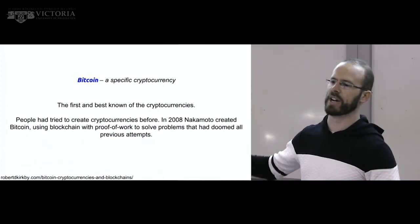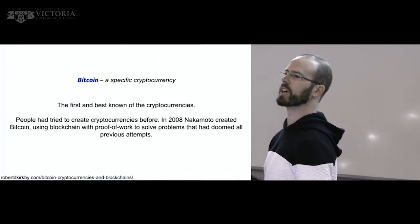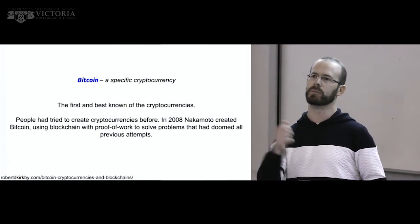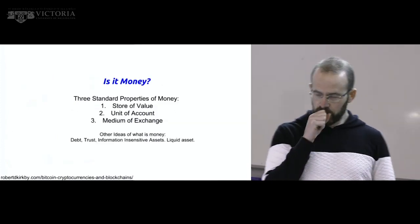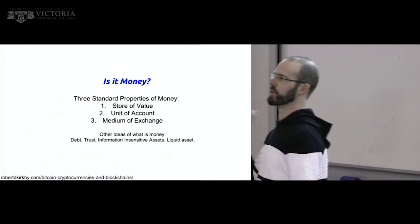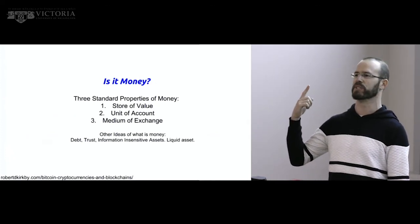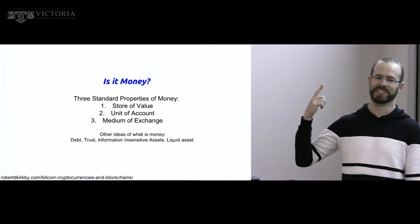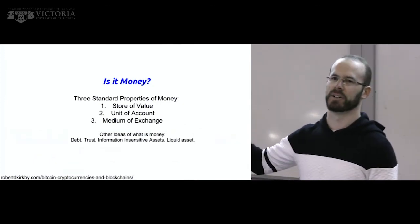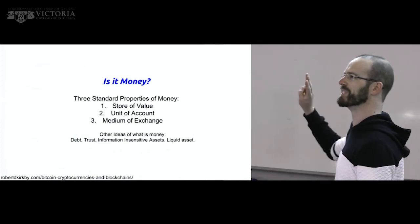This technological breakthrough based on proof of work made cryptocurrency possible, and in practice we can use it like any other token to buy and sell things. You don't invite an economist to talk about something like this unless you want them to talk about money — so the question I want to talk about today is: is it money?